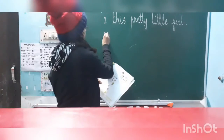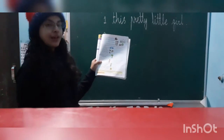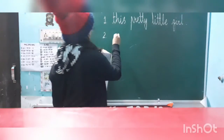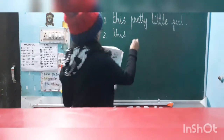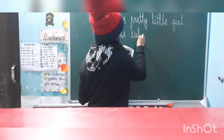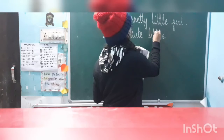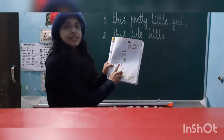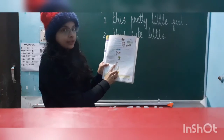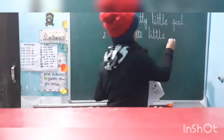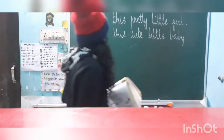Second one: 'These cute little babies.' Again we have to change 'these' into 'this.' Now we also have to change 'babies' — babies is the plural form, so the singular form of babies is 'baby.' We will write B-A-B-Y, baby. So: This cute little baby.